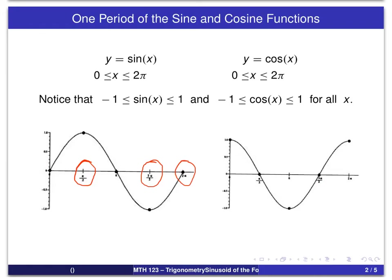This basically represents one complete cycle of the sine graph and of the cosine graph. And as you can see, both sine and cosine satisfy the inequalities minus 1 less than or equal to the value at x, less than or equal to 1.